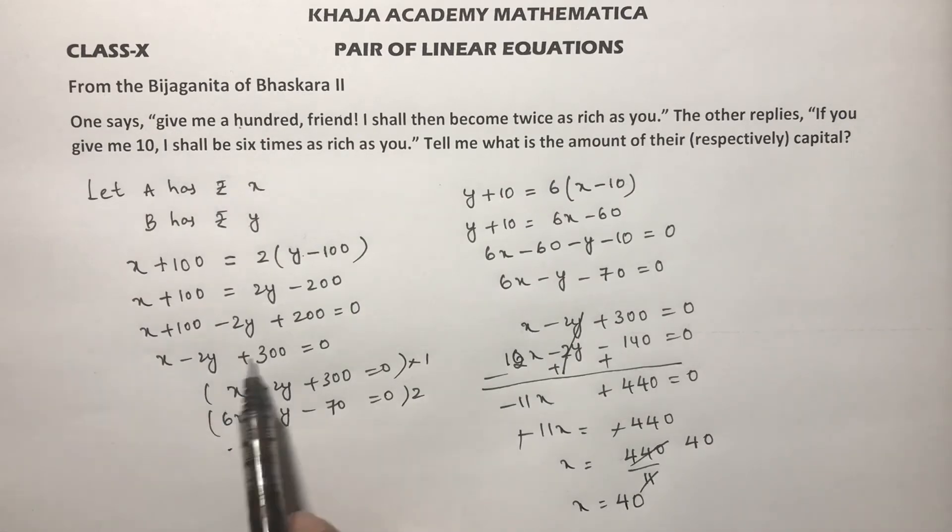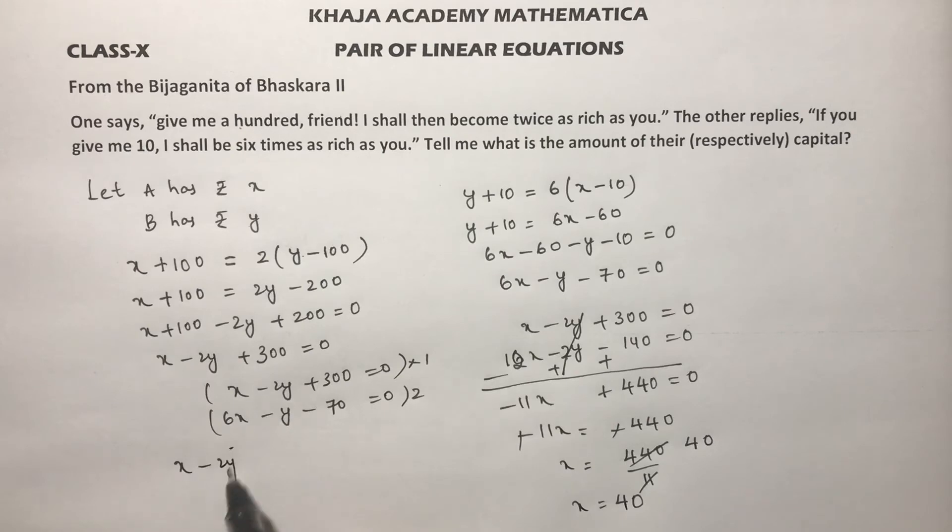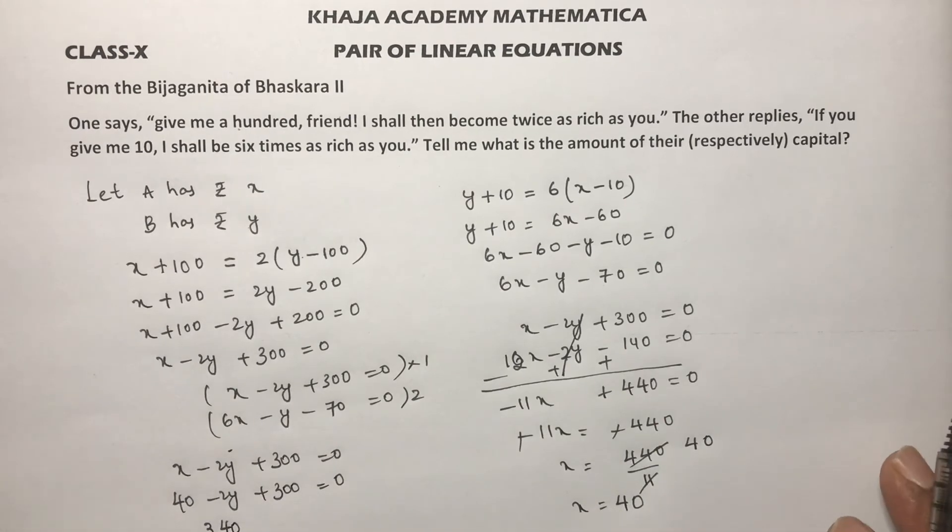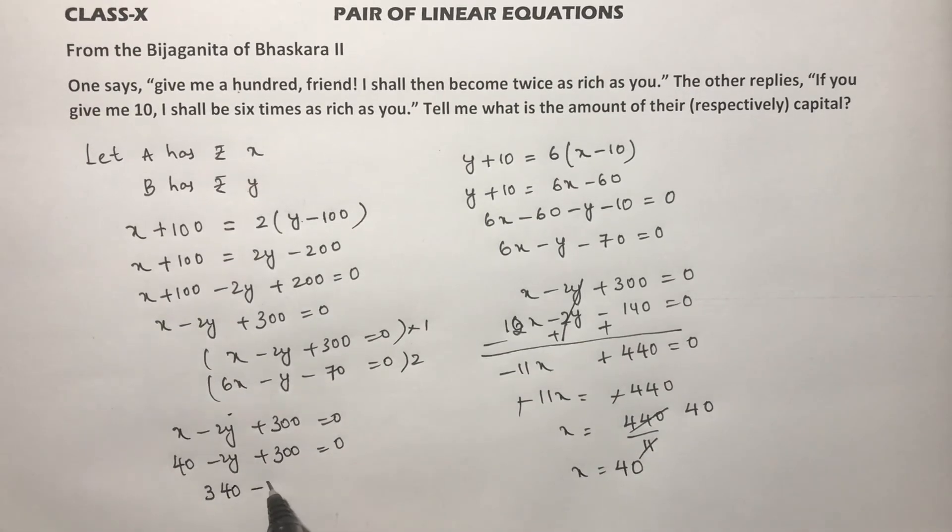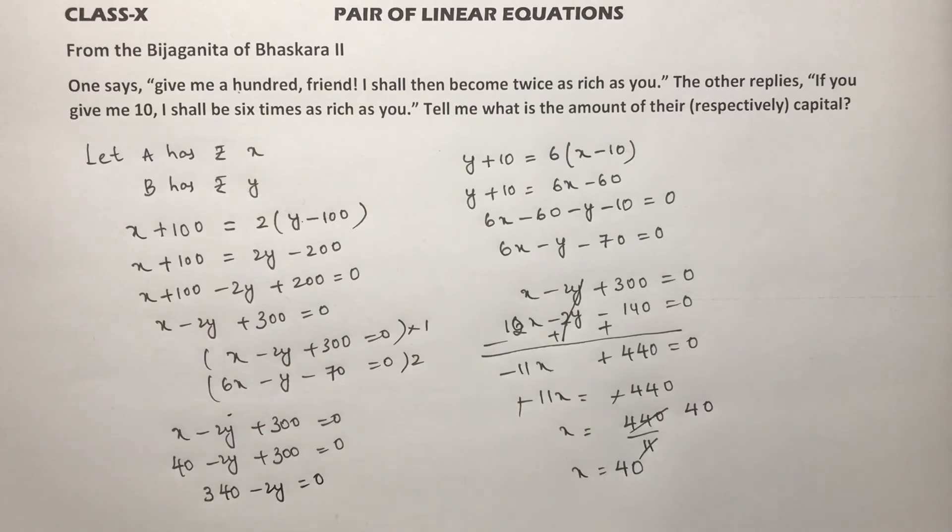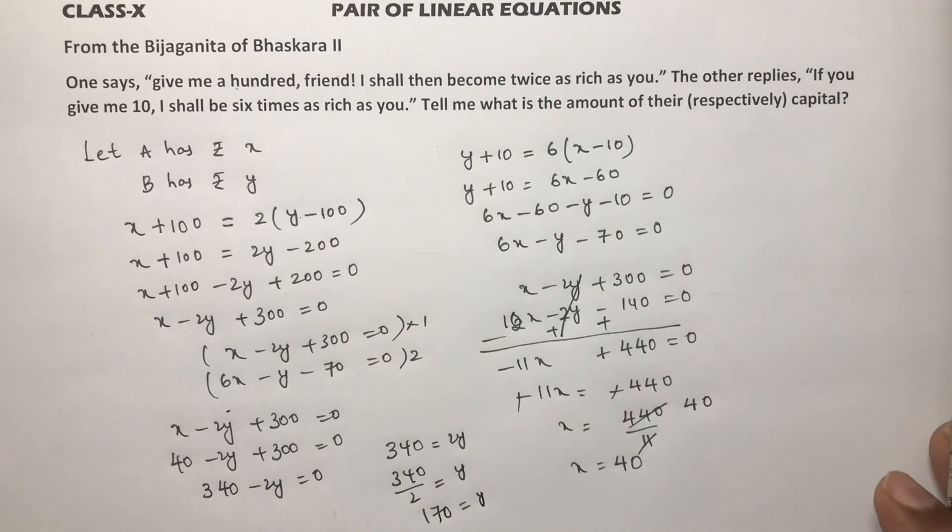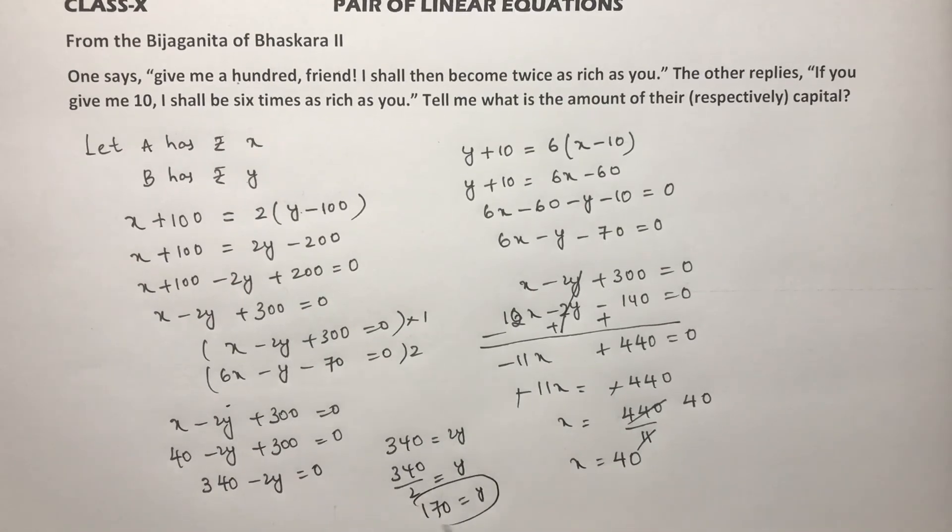Now substitute in any one of the equations. x minus 2y plus 300 equals 0, so 40 minus 2y plus 300 equals 0, 340 minus 2y equals 0, so 340 equals 2y, 340 by 2 equals y, 170 equals y. So A has 40 rupees.